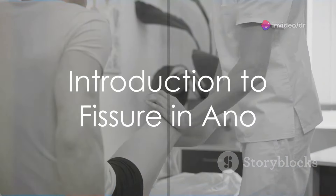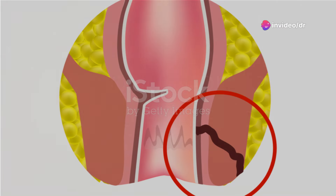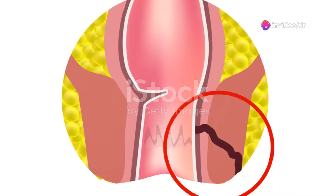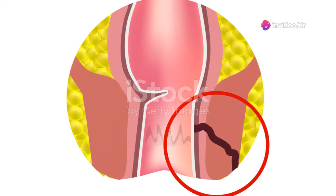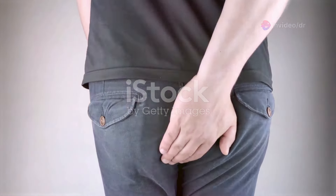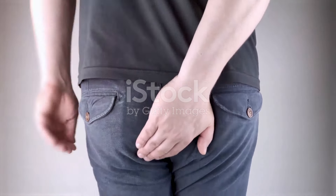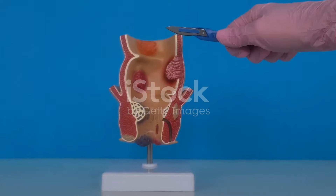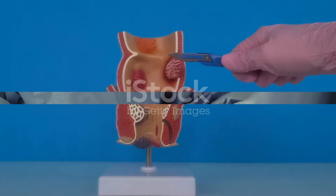What is a fissure in ano, you may ask? Well, think of it as a small tear or cut in the lining of the anus. This condition is quite common and can cause discomfort and even pain. But fear not, it is treatable and manageable.